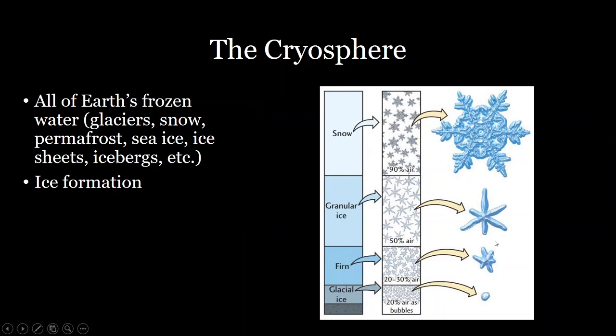Ice forms through compaction of snow. Snow has a very low density, and as it sits and gets covered by more snow, the air spaces between the ice crystals start to compact until those air spaces are no longer connected and you have closed-off air pockets — that's when we call it glacial ice.